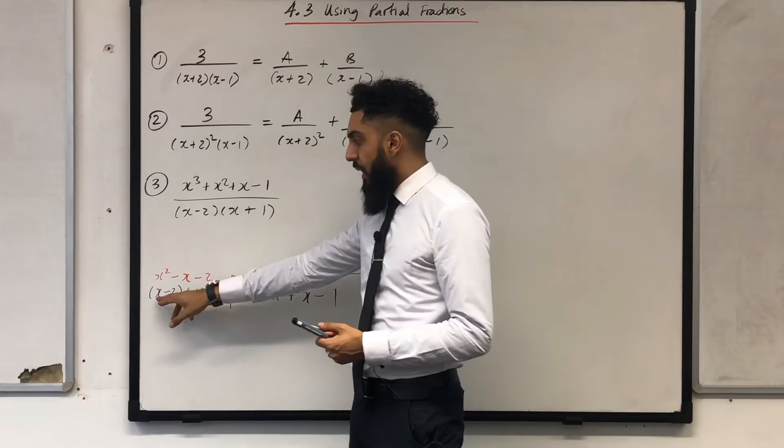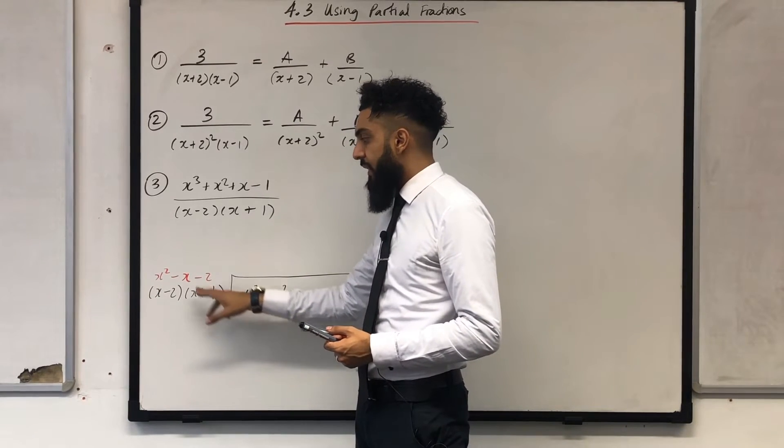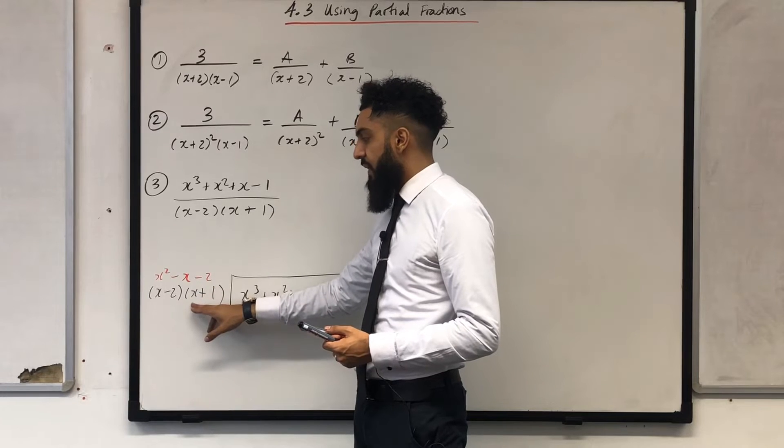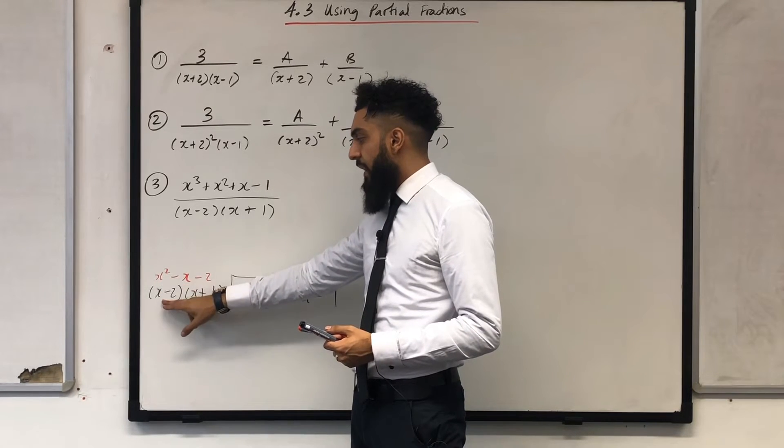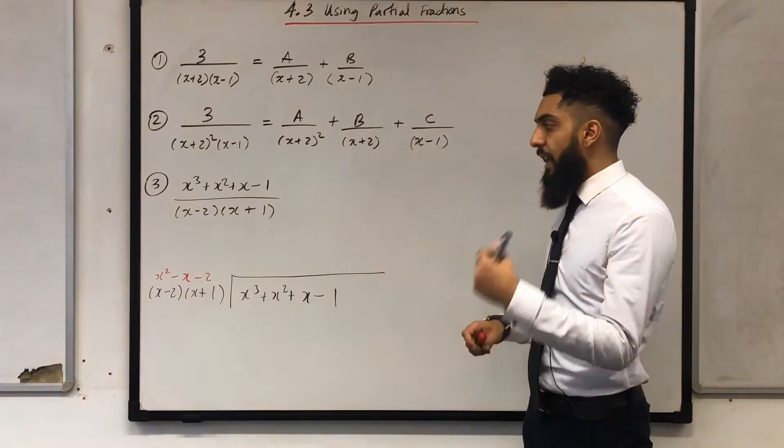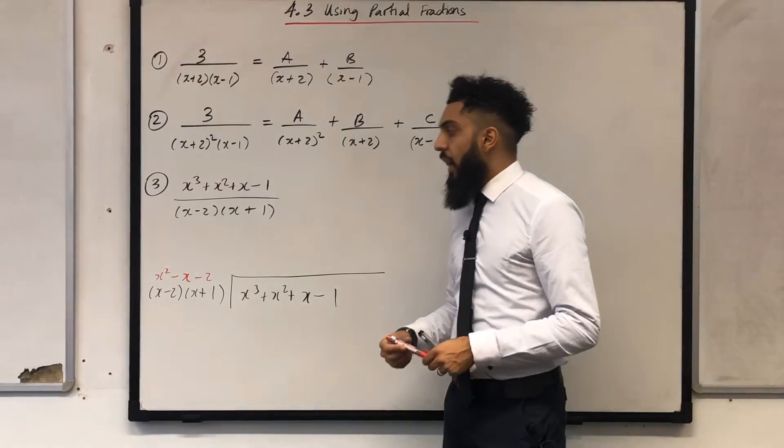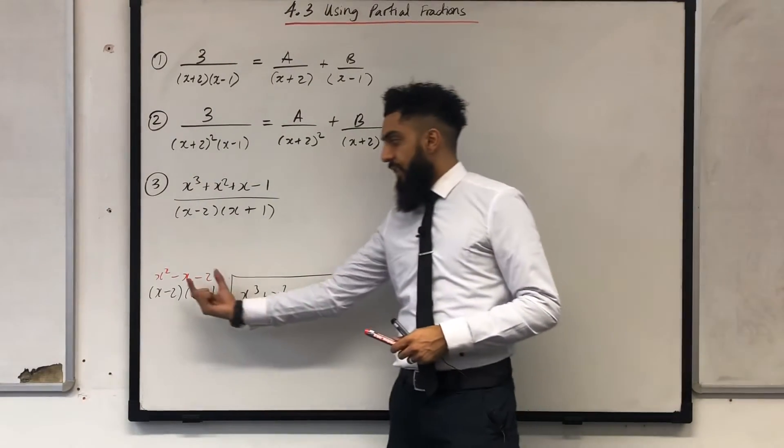The way I got that is x times x is x squared, x times positive 1 is x, minus 2 times positive x is minus 2x, minus 2 times positive 1 is minus 2. And we know that minus 2x plus x will give us minus x.